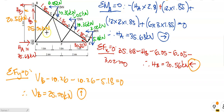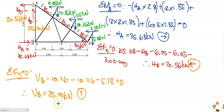So there we go. I've taken moments about B to find HA — found it to be 35.68 kN to the right. I've summed horizontals and found HB is 20.5 kilonewtons to the left. I've written it in — because when I marked your exams last semester, some of you left this out. When you go to this joint, you can't leave it out: these forces affect members BC and BA. And I've summed vertical forces and found VB to be 25.90 kilonewtons going up. That's the first part of the question done — solving for your reactions.